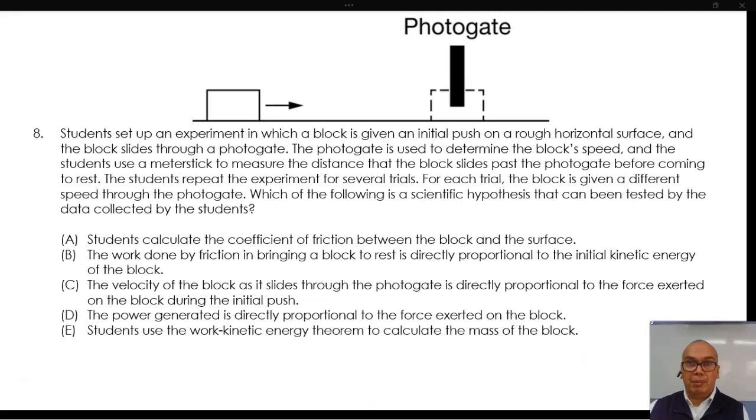8. Students set up an experiment in which a block is given an initial push on a rough horizontal surface, and the block slides through a photogate. The photogate is used to determine the block's speed, and the students use a meter stick to measure the distance that the block slides past the photogate before coming to rest.